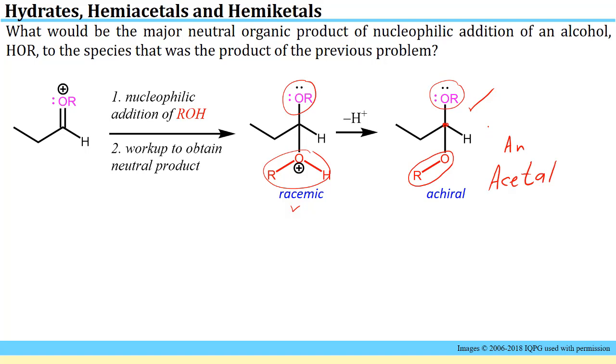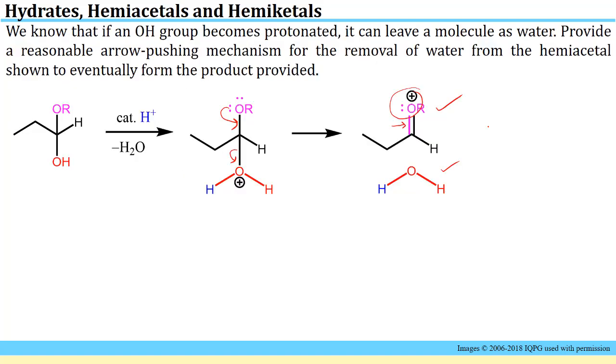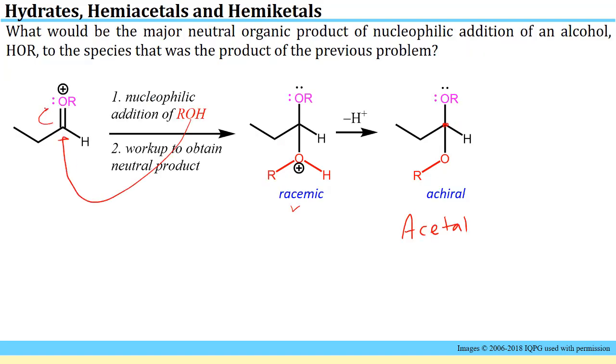We'll learn in a few lessons in the primer that these are actually very reasonable steps that happen. If we look back at the previous problem, if you take a hemiacetal it will undergo this type of reaction to form this intermediate. After that if you have an excess of alcohol around, so there's more that can keep adding, you'll eventually get to this acetal.